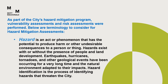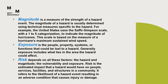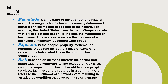Hazard identification is the process of identifying hazards that threaten the city. Magnitude is a measure of the strength of a hazard event, usually determined using technical measures specific to the hazard. For example, the United States uses the Saffir-Simpson scale with a 1 to 5 categorization to indicate the magnitude of hurricanes, based on a measure of a hurricane's maximum sustained wind speed.